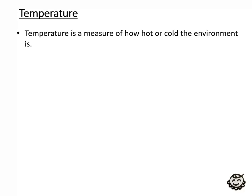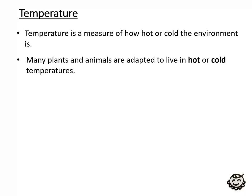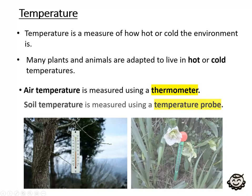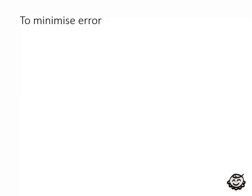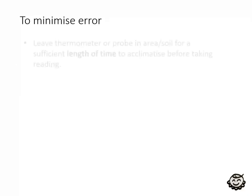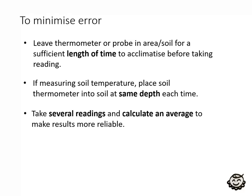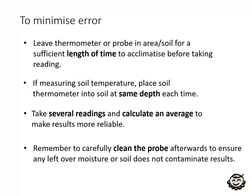Temperature is the measure of how hot or cold the environment is. Many plants and animals are adapted to live in hot or cold temperatures. Plants which like the cold include pansies, snapdragons, and trees like evergreens, spruce, pine, and oak. Cacti like hot environments. Air temperature is measured using a thermometer; soil temperature is measured using a temperature probe. To minimise error, leave the thermometer or probe in the area of soil for a sufficient length of time to acclimatise before taking readings. Place the soil thermometer at the same depth each time. Take several readings, calculate an average, and carefully clean the probe afterwards to ensure leftover moisture or soil does not contaminate results.